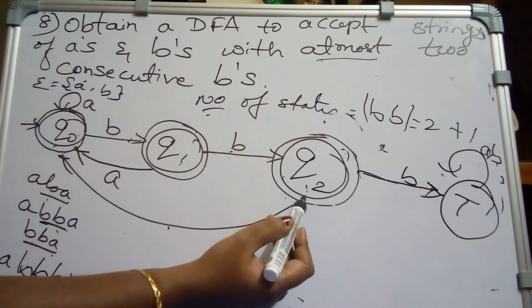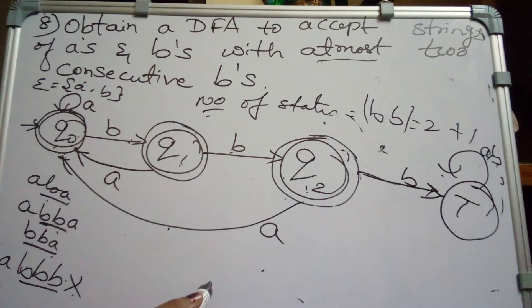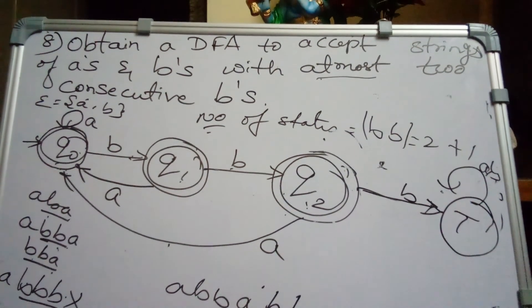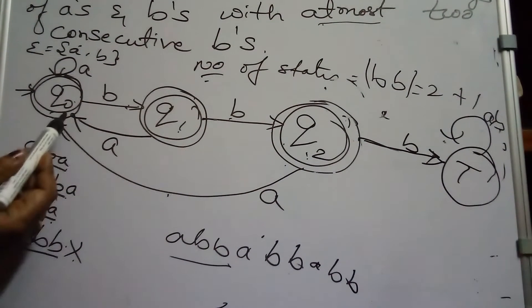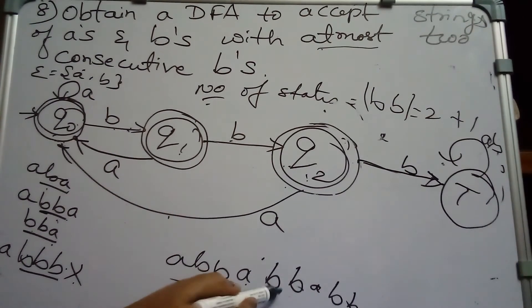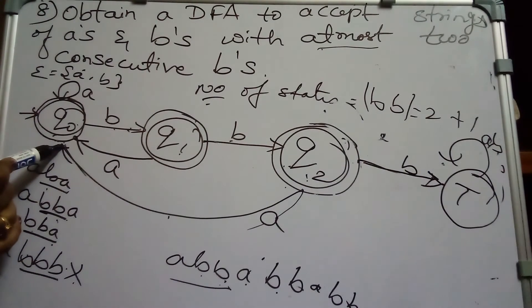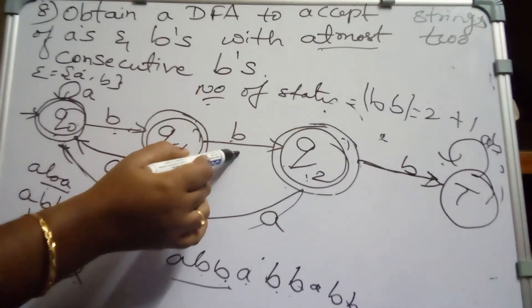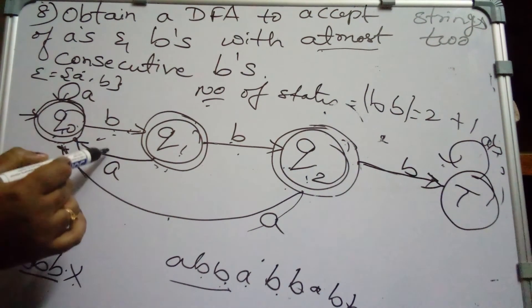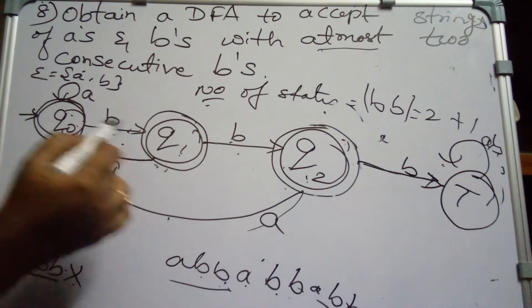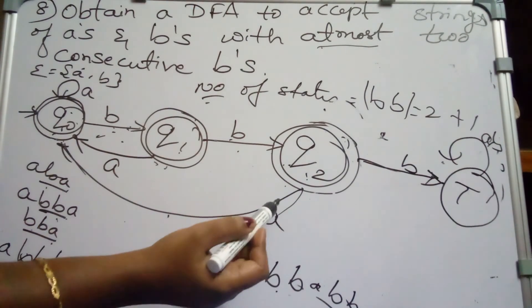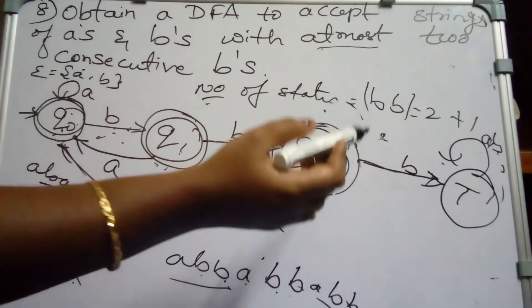For example, ABB followed by AB: from Q0 on A stay at Q0, on B go to Q1, on B go to Q2, on A back to Q0, on B go to Q1 — accepted at Q1. Finally we have written for all states on reading input A and B where it moves.